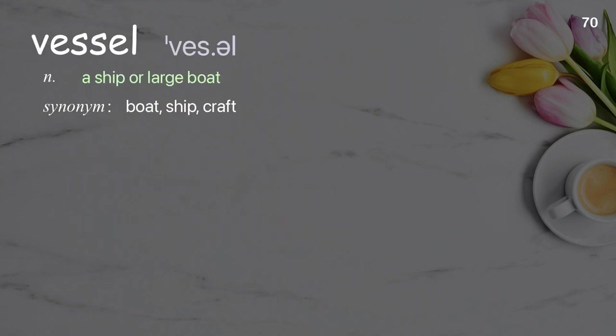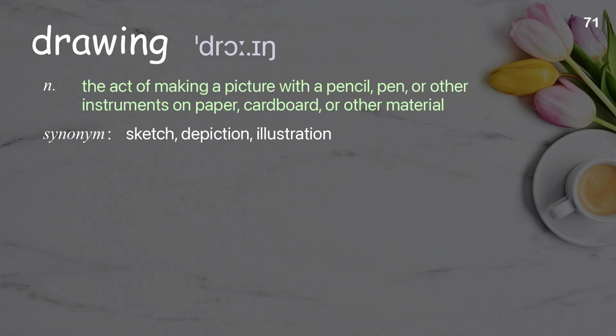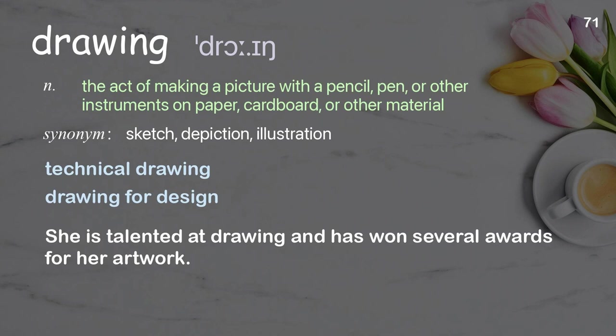Vessel: a ship or large boat. Examples: blood vessels, naval vessels. The vessel arrived in port the following day. Drawing: the act of making a picture with a pencil, pen, or other instruments on paper, cardboard, or other material. Examples: technical drawing, drawing for design. She is talented at drawing and has won several awards for her artwork.